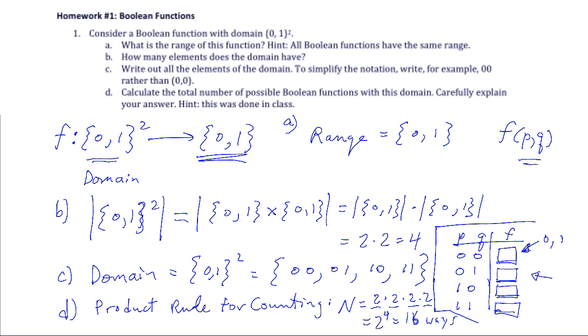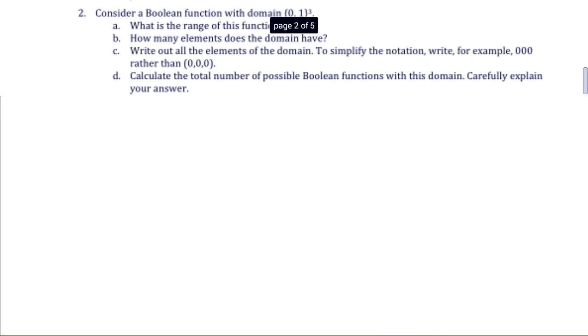Now I'll move on to problem number two. This one won't take nearly as long because this is just the same problem with n equals 3. We'll write this function as mapping the domain {0,1}³ to the range. Same range for all Boolean functions. We could write it as f(p,q,r) because n equals 3. What is the range?